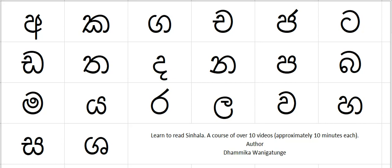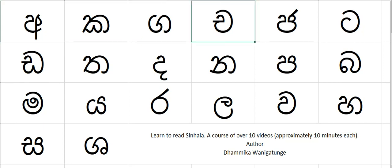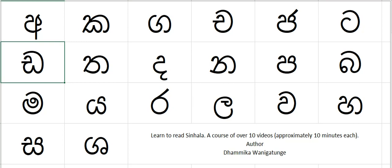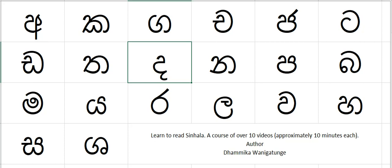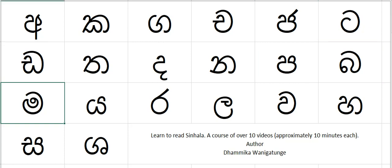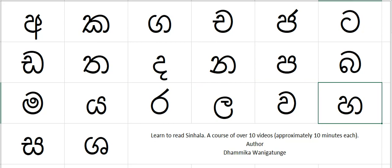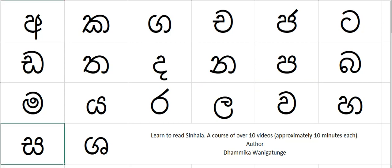Let's start with the first letter of the Sinhala alphabet: a, ka, ga, cha, ja, ta, da, tha, da, na, pa, ba, ma, ya, ra, la, wa, ha, sa, sha.